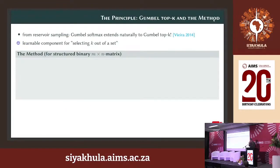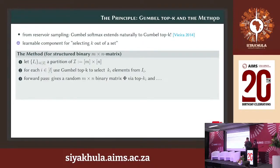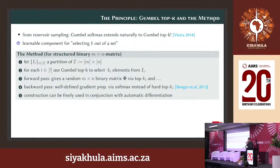One can also do a Gumbel top-K, selecting the K strongest components from a set. For a binary M-by-N matrix, you partition the matrix into regions where you want a certain number of ones per region. For every region, apply Gumbel top-K to select K elements and set them to one. In the forward path, draw a random matrix; in the backward path, replace the argmax with the softmax to enable automatic differentiation. This works with any automatic differentiation tool like PyTorch or JAX.